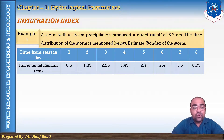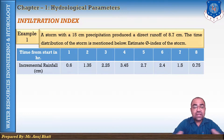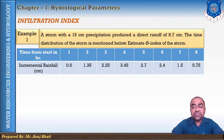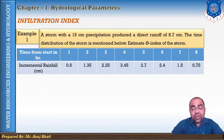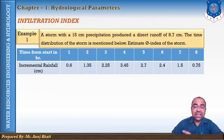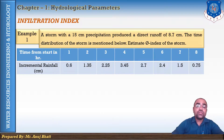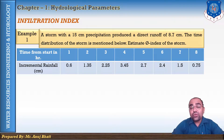At the first hour the rainfall was 0.6 cm, then 1.35, 2.25, 3.45, 2.7, 2.4, 1.5, and 0.75 for the subsequent hours. Now we have to estimate the phi index. In the previous lecture we had a rate of rainfall so we could assume a phi index value directly, but here we do not have that rate value. So first we have to find the w index, and from that we can proceed further.